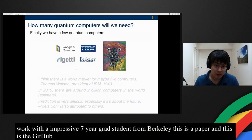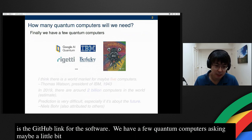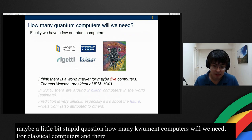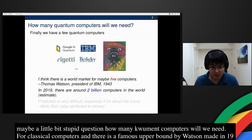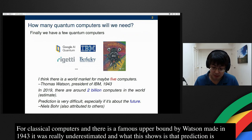Finally now we have a few quantum computers. Ask a maybe a little bit stupid question, how many quantum computers will we need? For classical computers, there's a famous upper bound by Wilson made in 1943, which is about five. It was really underestimated and what this shows is that prediction is very difficult, especially if it's about the future.